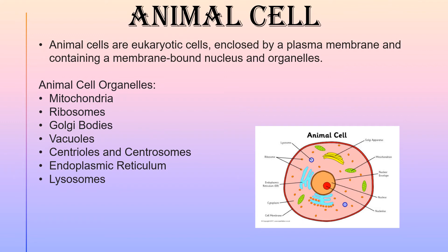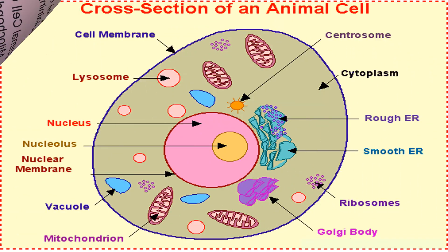The cell organelles of an animal cell are mitochondria, ribosomes, Golgi bodies, vacuoles, centrioles and centrosomes, endoplasmic reticulum and lysosomes. Now let's briefly discuss about the organelles of an animal cell.